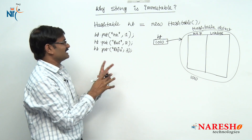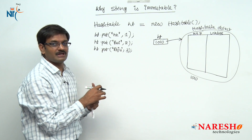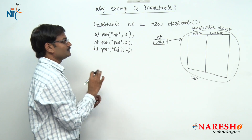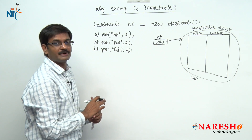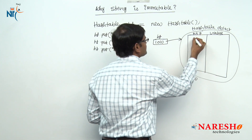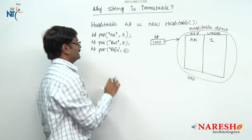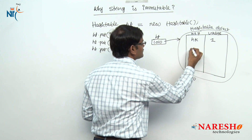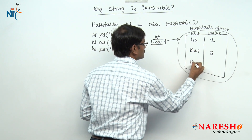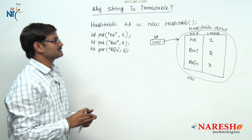Hashtable does not maintain order — according to hash code it will store. That is related to the collection chapter. At this point, I want to understand only why string is immutable, so I am not worrying about collection internal management. For understanding purposes, I am storing hk as the first entry, Ravi as the second entry, and Raju as the third entry.